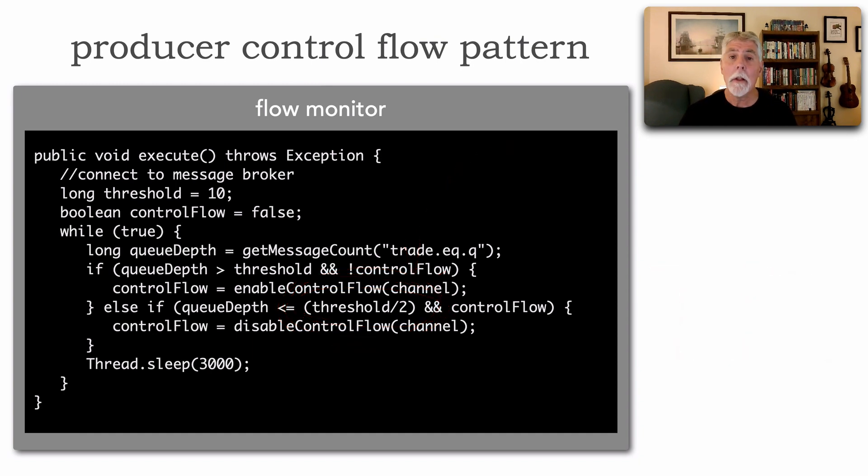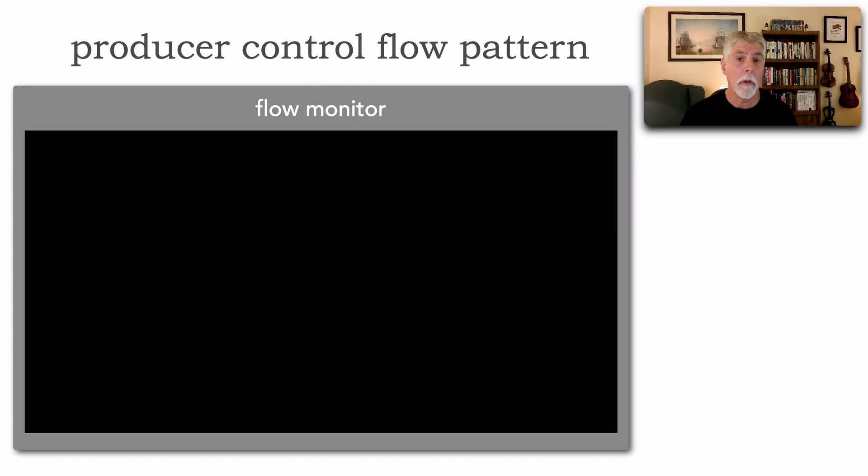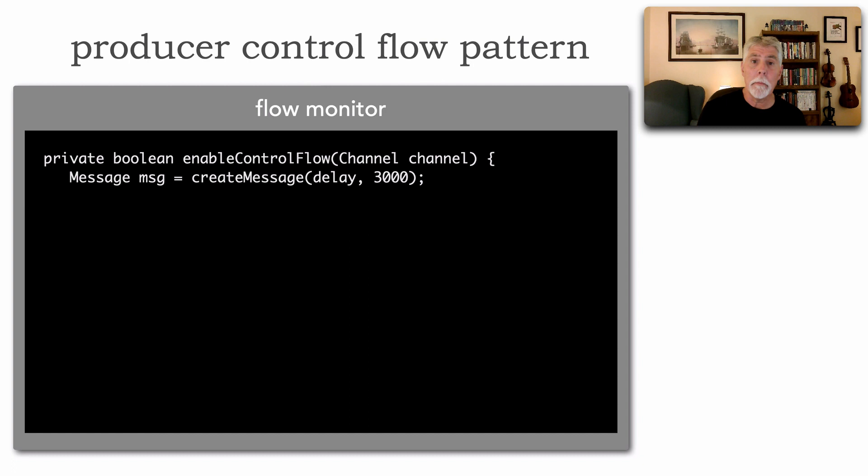Okay well let's take a look at the enable and disable control flow. How do we do that? Well what I do is I simply create a message. So I'm going to set a delay flag, this is a simple map message, to 3,000 milliseconds. So I'm going to tell everybody delay for 3 seconds and I send the message to a particular control flow queue or topic that all producers are listening on. And then of course I just return true saying we are in control flow.